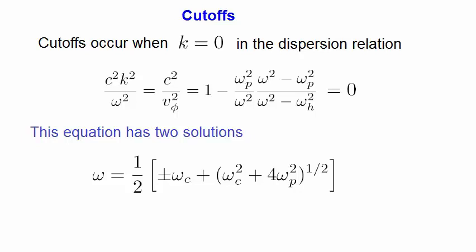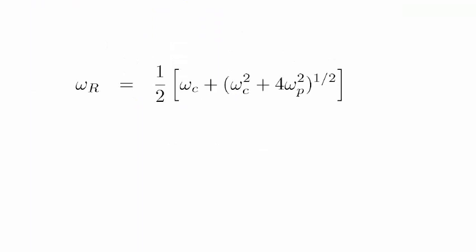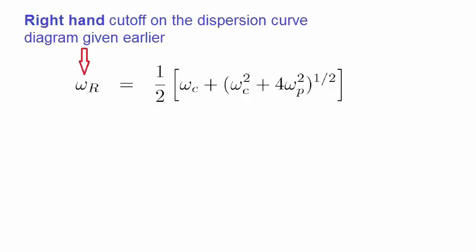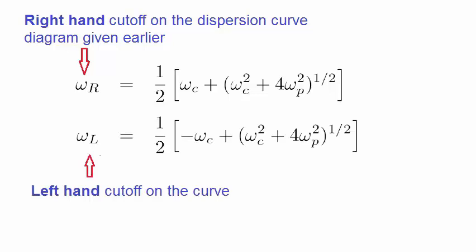Let's take a look at each of these two solutions. The expression with the plus sign is labelled as ωr, and is given by this. This is known as the right-hand cut-off on the dispersion relation diagram, thus the subscript r. The other solution with the minus sign in front of ωc is known as the left-hand cut-off.